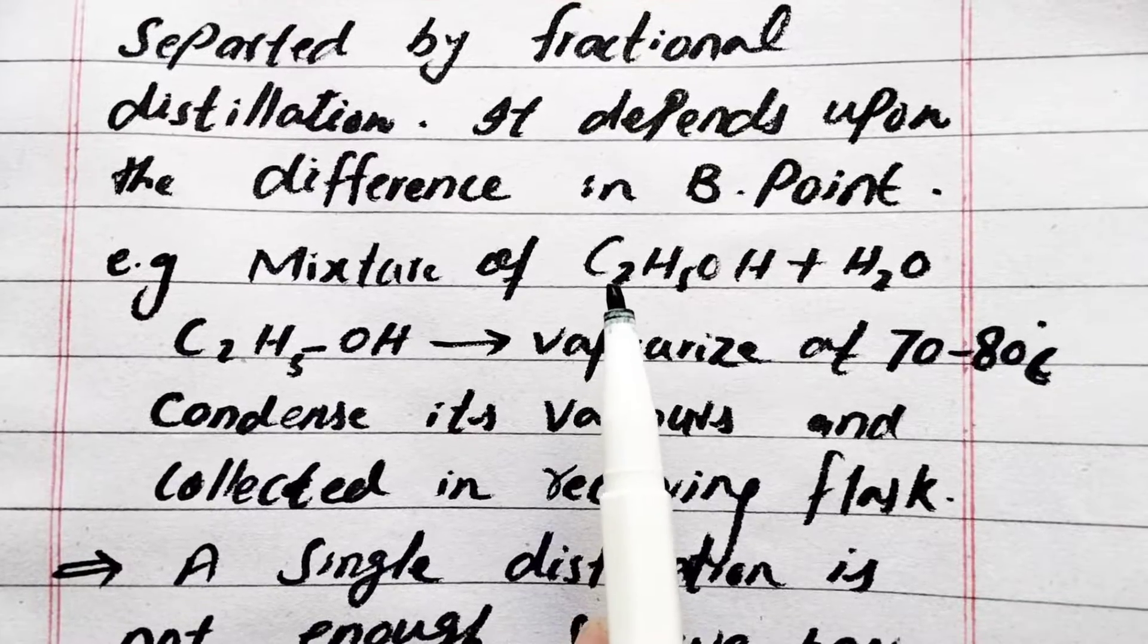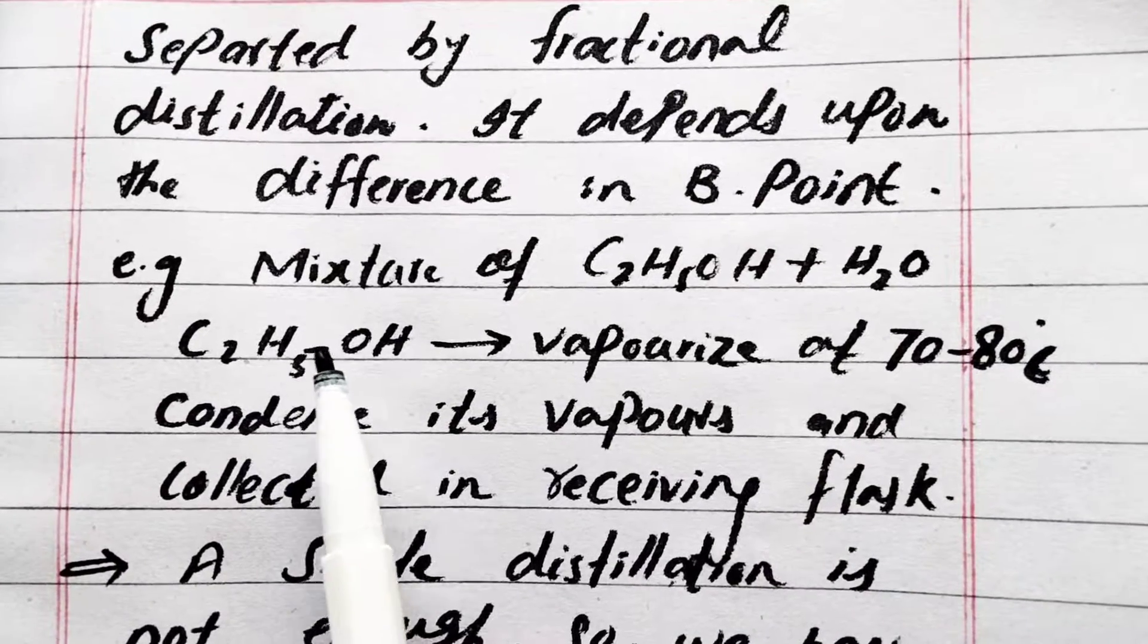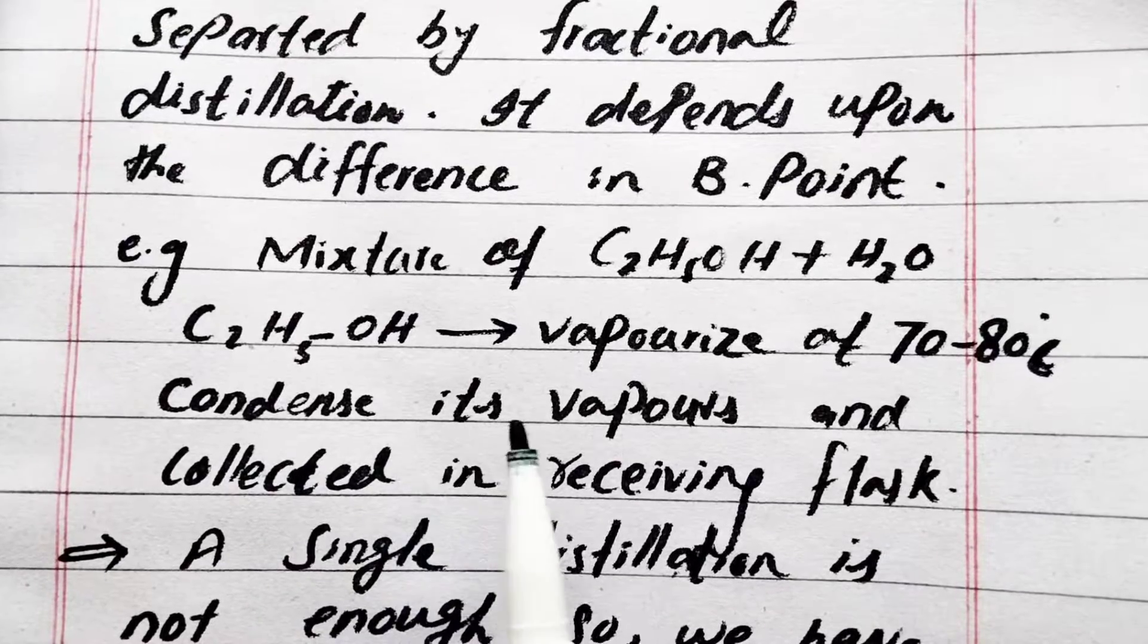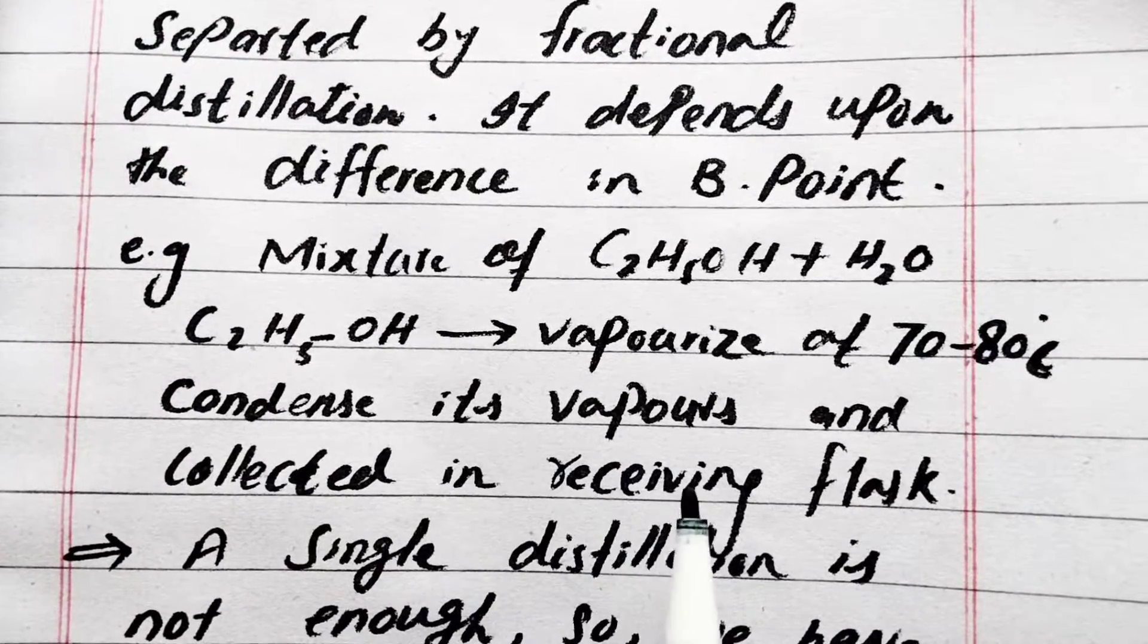For example, the mixture of ethanol and water. Ethanol vaporizes at 70 to 80 degrees Celsius and condenses its vapors and collects it in the receiving flask.